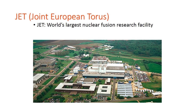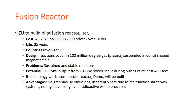JET (Joint European Torus) is the world's largest nuclear fusion research facility. The EU plans to build a pilot fusion reactor (ITER) at a cost of 4.57 billion euros over a 10-year life, with 35 years and 7 countries involved. Reactions occur in 100-million-degree gas plasma suspended in a donut-shaped magnetic field. Challenges include sustaining stable reactions; potential output is 500 MW from a 70 MW power input during pulses of at least 400 seconds. Advantages: no greenhouse emissions, inherently safe shutdown systems, and no high-level long-lived radioactive waste.